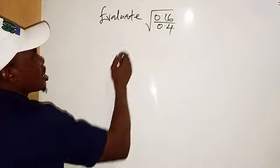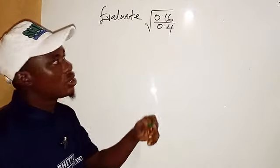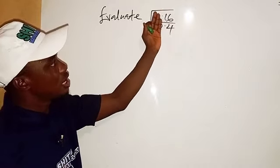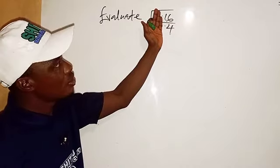Because we have 0.16 over 0.4 here, let's just close our eyes and think. Behave as if the decimal point is not there.